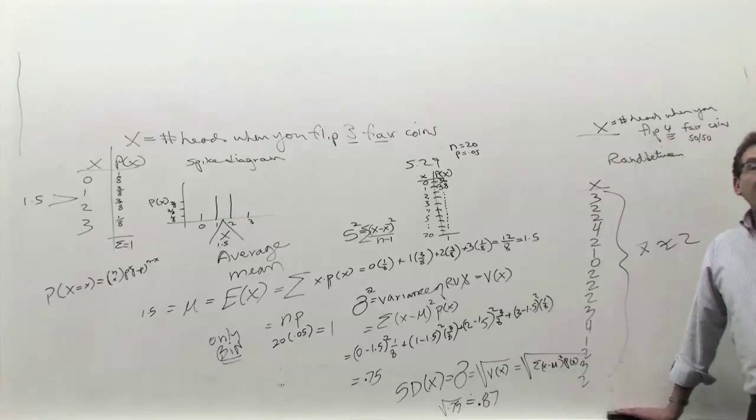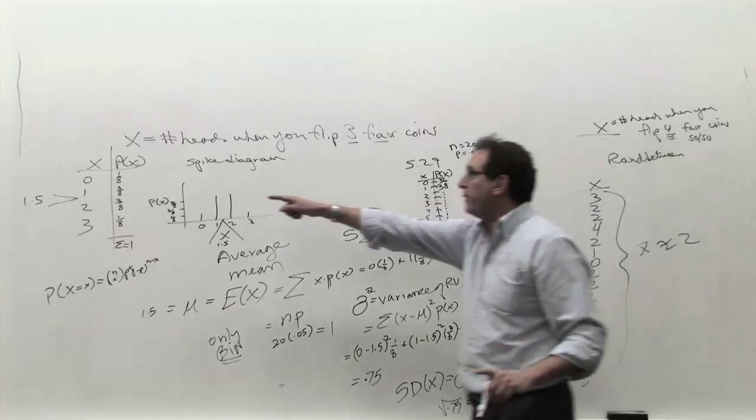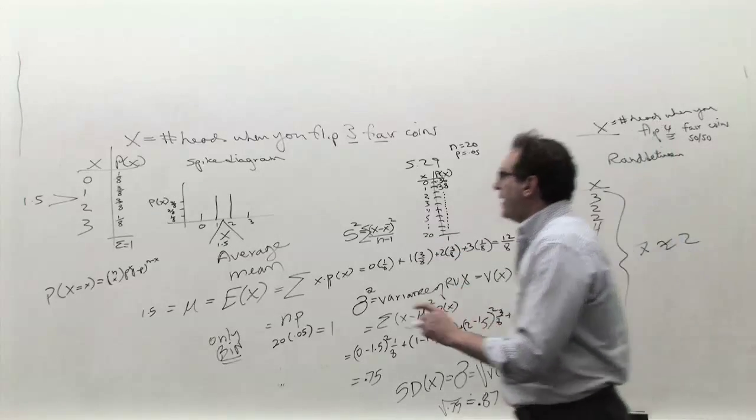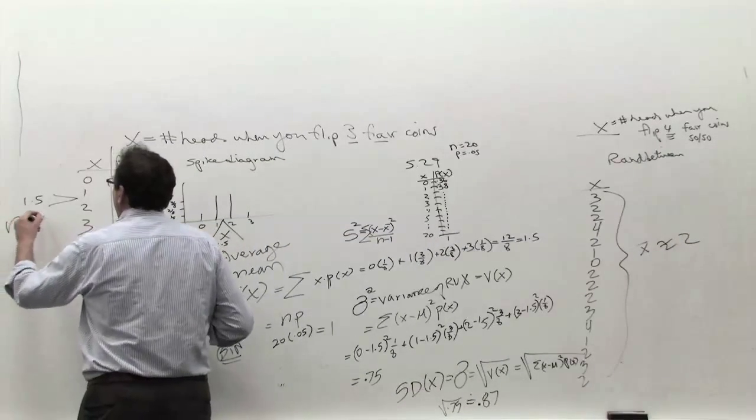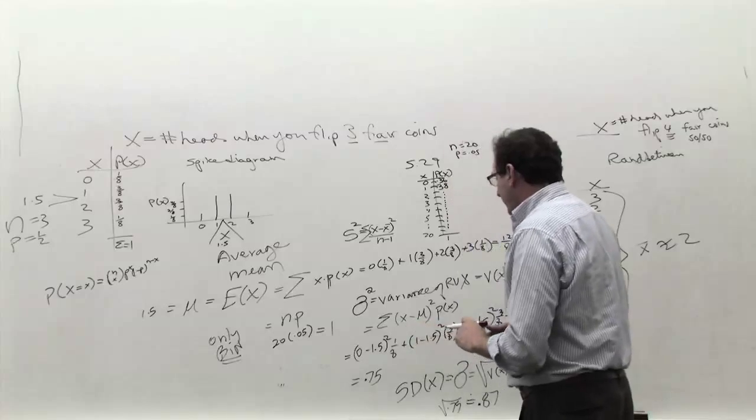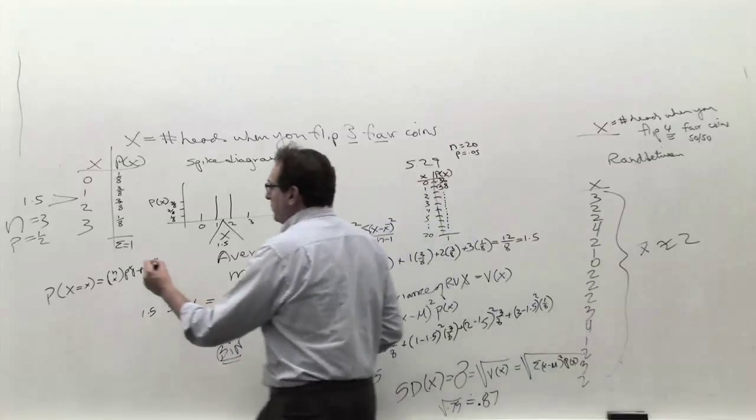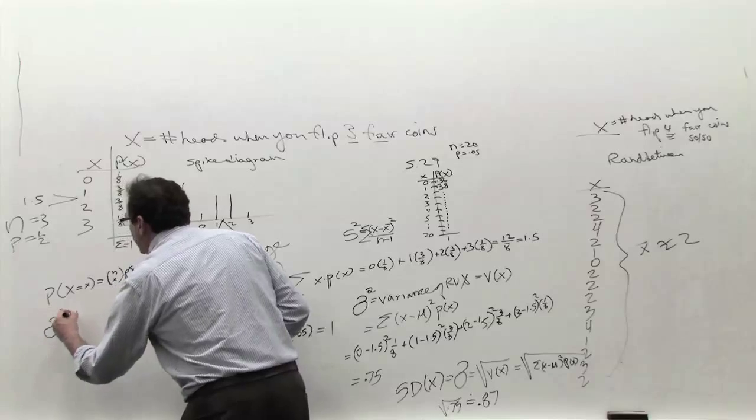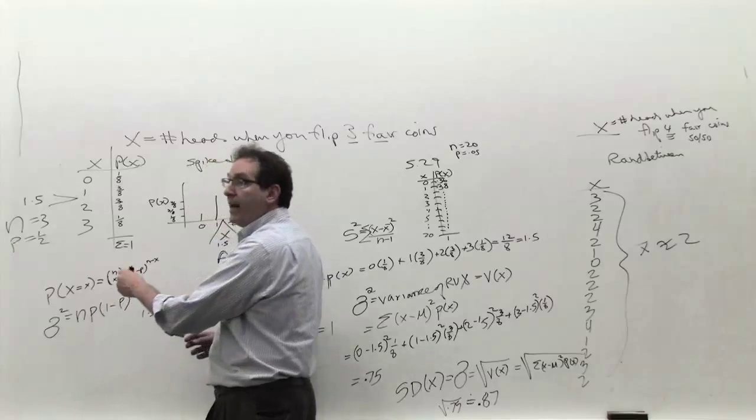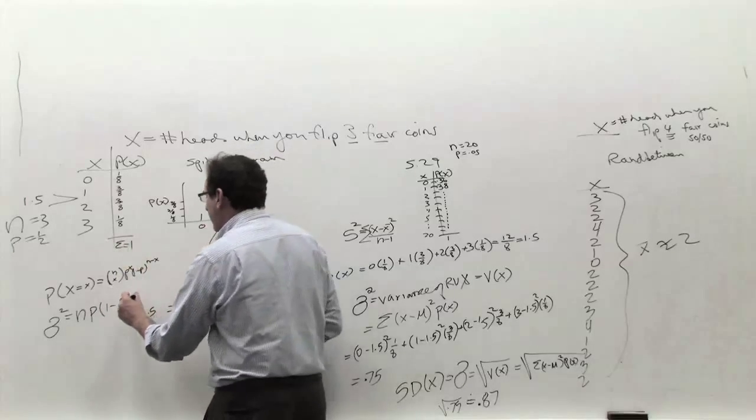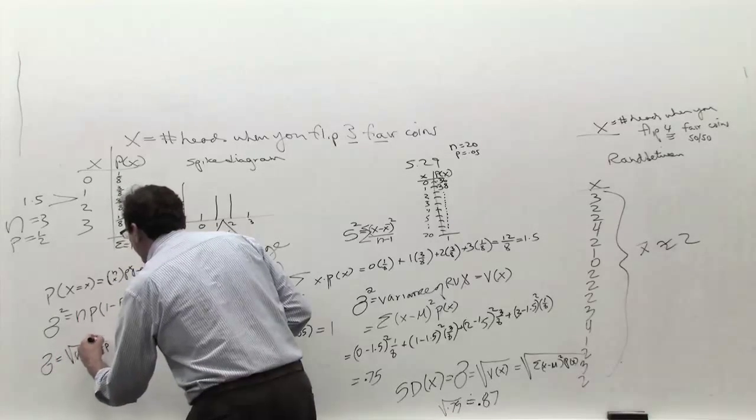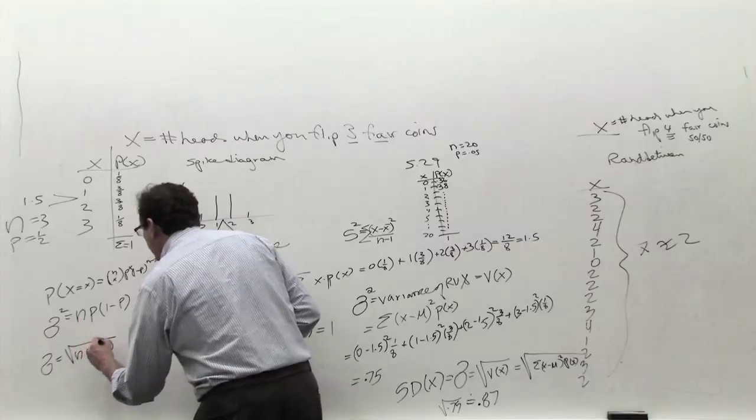Now, what was the shortcut formula that, again, could only be used for the binomial? Because this is, in fact, a binomial. Here we are flipping coins. We know the n is 3. Here the n is 3. The chance of the head is a half. So what's the shortcut formula? The shortcut formula for the sigma squared is n times p, which is the same as the previous formula, but now multiplied by 1 minus p. And the sigma is simply the square root of the n times p times 1 minus p.